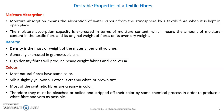The next desirable property is density — the mass per unit volume, generally expressed in grams per cubic centimeter. High density fibers produce heavy weight fabric and vice versa. The third desirable property is color. Most natural fibers have their own natural color: silk is slightly yellowish, and cotton is cream white or has a brown tint. Most synthetic fibers are creamy in color. These natural colors must be removed before dyeing through a process called bleaching.